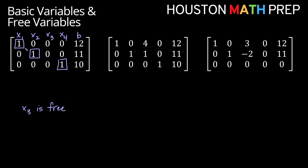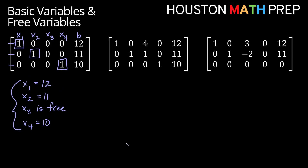Reading the rows one at a time: the first row says x1 is equal to 12; the next row says x2 is equal to 11; x3 is free; and the last row says x4 is equal to 10. So if we imagine these as points in four-dimensional space, the first, second, and fourth coordinates all have specific values they must be, but the third variable is allowed to take on any value. That's our solution for the first system.